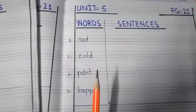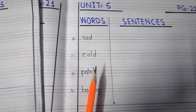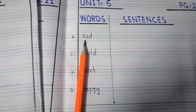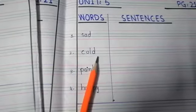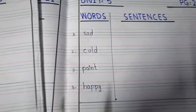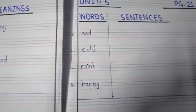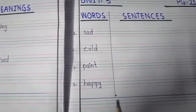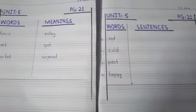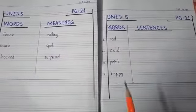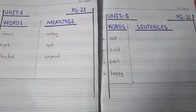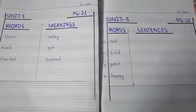Now you have to make your own sentences. I am repeating the words again. First is sad. Second is cold. Third is paint. And fourth is happy. And at the end you have to draw an ending line. You have to do your work like this. Make sure that your work should be neat and your formation should be correct.